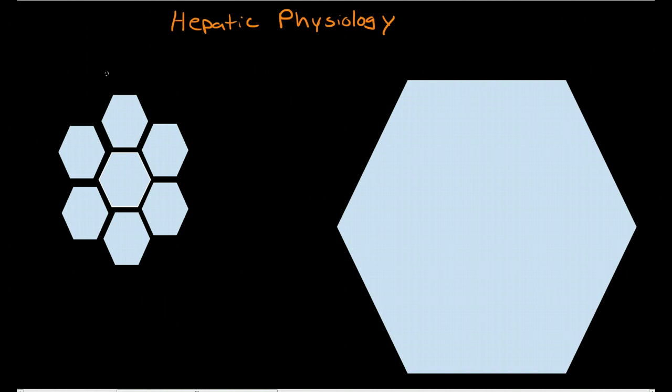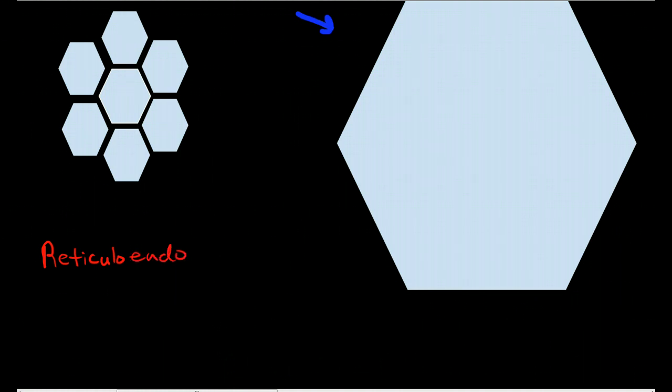So the liver is broken up into functional units that look like hexagons and it's laid out in a way that looks like a beehive or honeycomb. Now these hexagons are made up of a bunch of cells. The cells include what are called the reticuloendothelial cells, and these are the cells that provide the structure for the major functional cells of the liver.